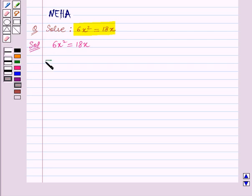This implies 6x square minus 18x is equal to 0. We have transposed 18x to the left hand side.